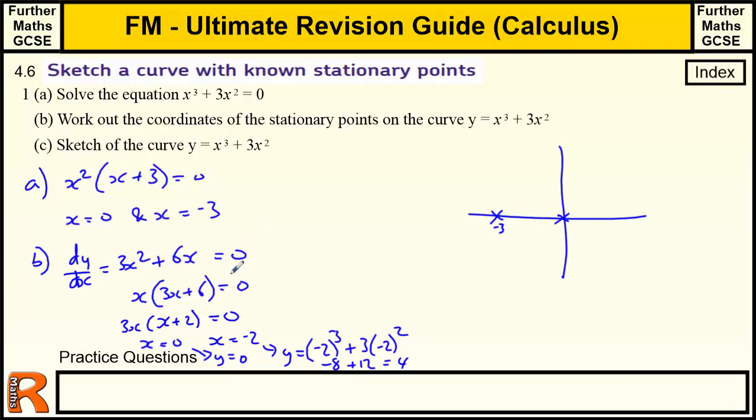And then we've got two stationary points. One's at (0,0), so that's a stationary point. And then we've got one that's at (-2,4). So -2, 4 is another stationary point.